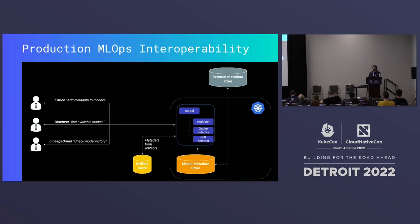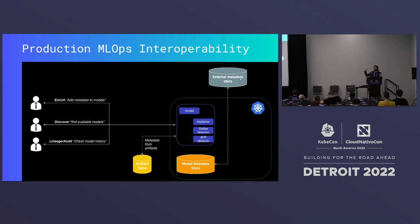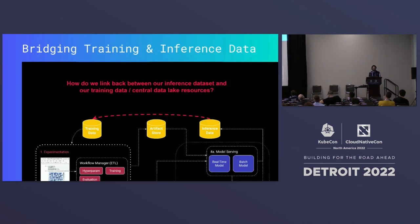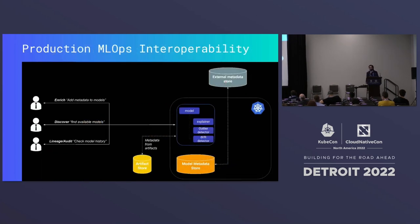We assume there will be a centralized external metadata management system that asks higher-level questions across the end-to-end ML lifecycle. We would expect model artifact systems and experimentation training systems to also play nicely and expose that information so we can all work in tandem as a community. That is essentially the call to action in regards to relationships.